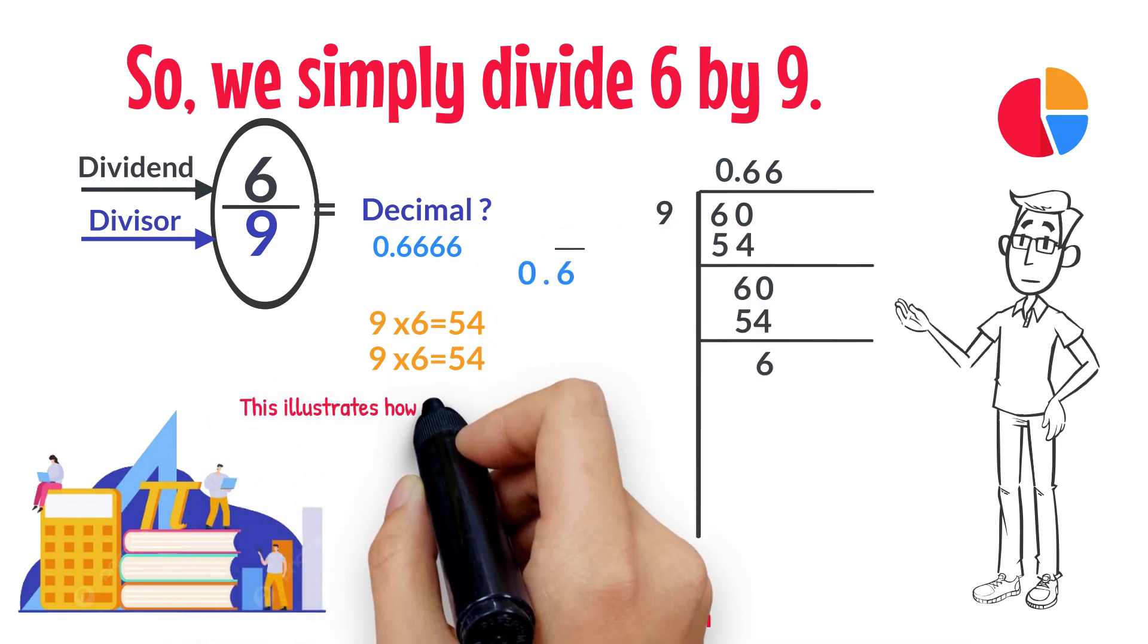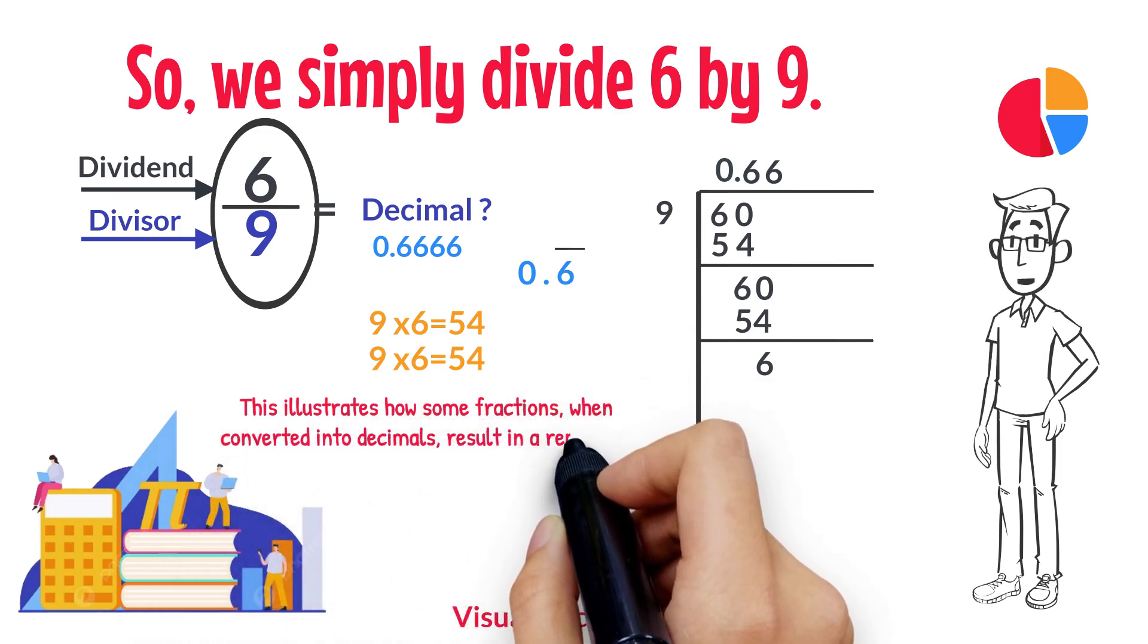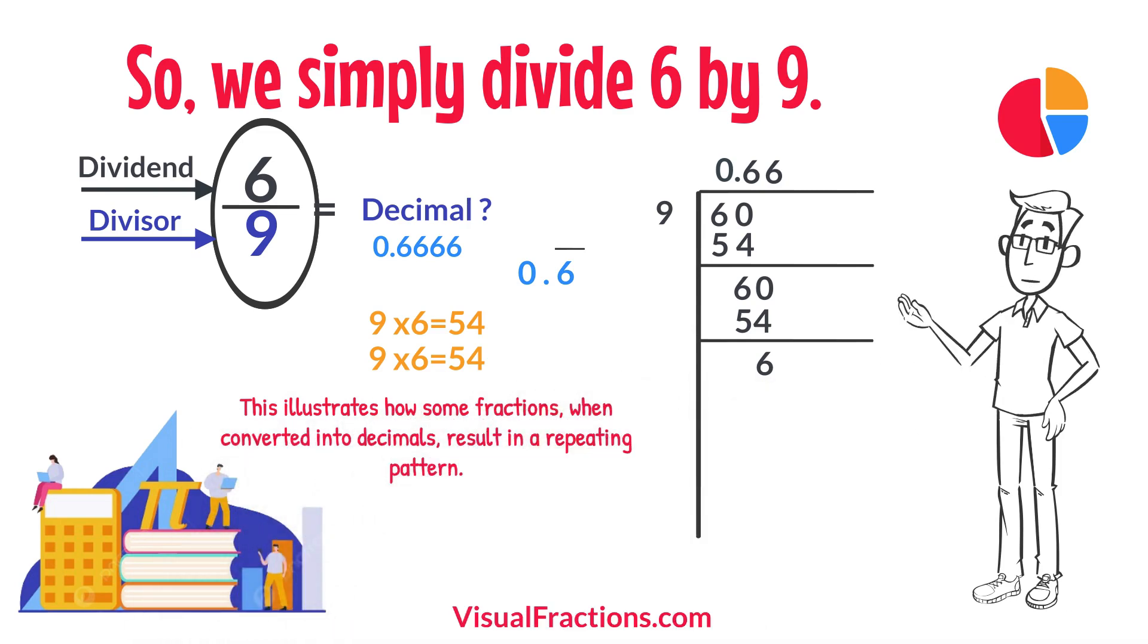This illustrates how some fractions, when converted into decimals, result in a repeating pattern. So, there we have it. The fraction 6 ninths converted to a decimal is 0.6 with a bar on top of 6.